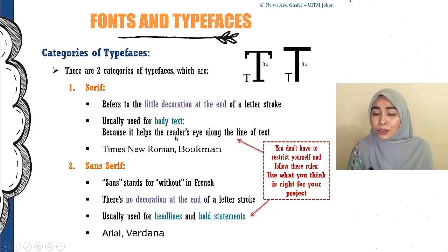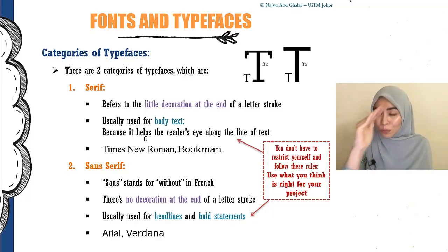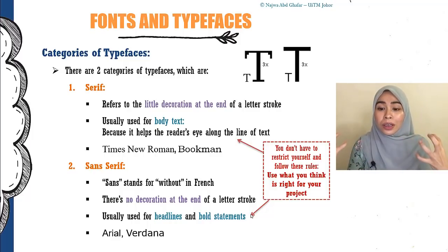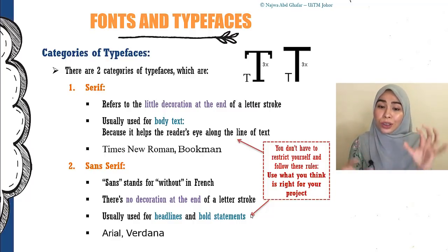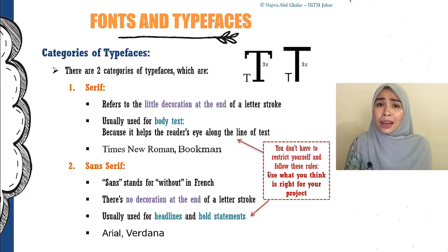Serif is usually used for the body of text. In reports, people say to write in Times New Roman because it helps the reader's eye along the line of text — the decoration helps your eye follow from one letter to another. Sans serif is usually used for headlines and bold statements because the letters are big and chunky. But these are just tips — you don't have to restrict yourself to these rules. Use what you think is right for your project.